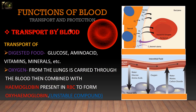Blood has two main functions: transport and protection. Under transport, blood carries different substances. Digested food such as glucose, amino acids, vitamins, and minerals are transported through the blood.